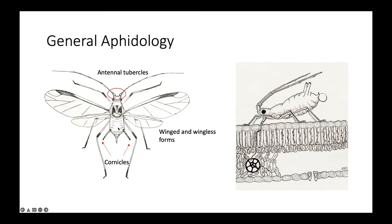Aphids have cornicles — they look like little tailpipes on the tips of their abdomens — and they can be longer or shorter, the same color as the body or a different color; this can be a distinguishing feature. The antennal tubercles at the base of the antennae — whether they point outward or inward — are another distinguishing characteristic, as are the length and color of the antennae and sometimes the color of the legs. As adults, there can be both winged and wingless forms; the winged ones come into your field from overwintering sites, but mostly what we see on tomatoes is the wingless form.